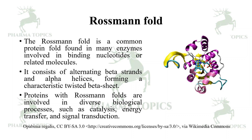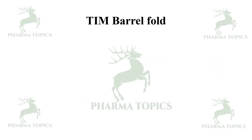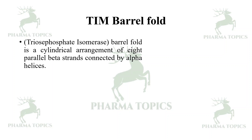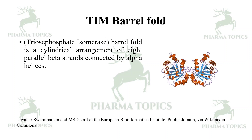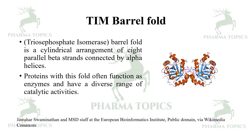The TIM barrel fold — triose phosphate isomerase barrel fold — is a cylindrical arrangement of eight parallel beta strands connected by alpha helices. Proteins with this fold often function as enzymes and have a diverse range of catalytic activities.